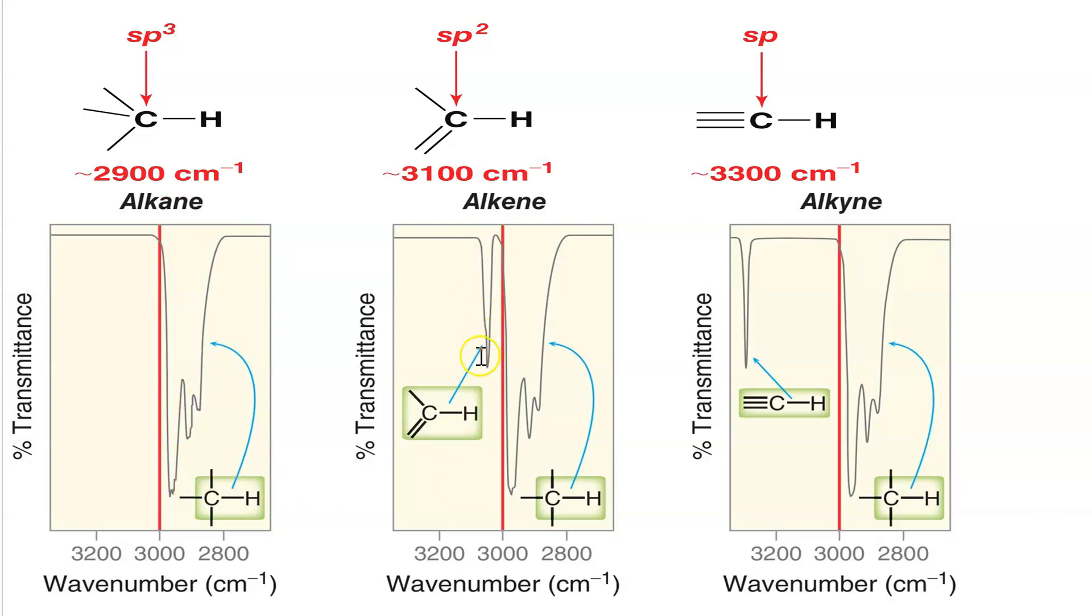Bands just to the right of it are sp3 C-H stretches. If, however, you have a sharp band to the left at about 3100 wavenumbers, that's an sp2 C-H. You'll see that in an alkene that is not tetrasubstituted. However, a tetrasubstituted alkene will not have this.